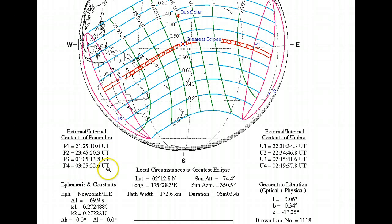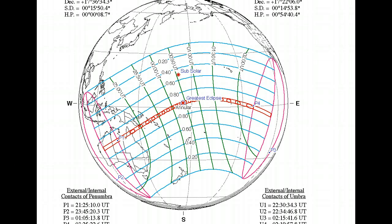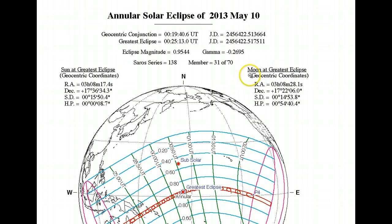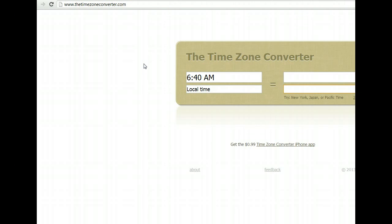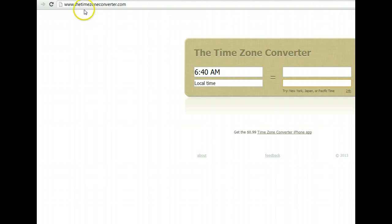How can we know the Universal Time wherever you are in the world? When things happen in space — like eclipses, comets, or anything space-related — they always use Universal Time. What you have to do is convert Universal Time to your time zone wherever you are in the world. I'm going to show you a website — a very easy way to do this.